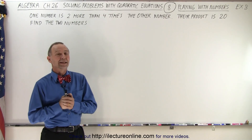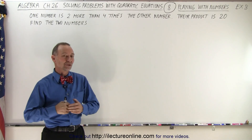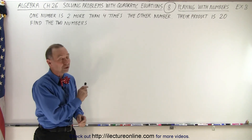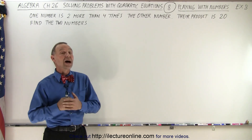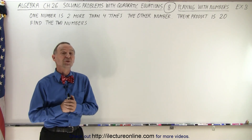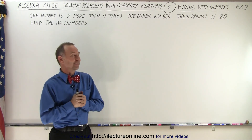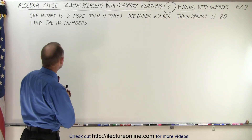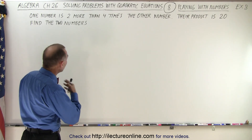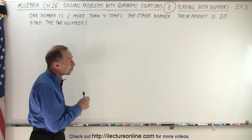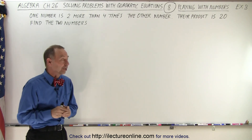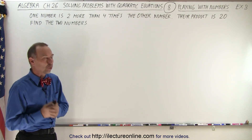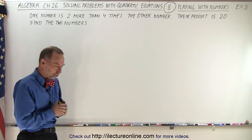Welcome to ElectronLine. Now that we understand quadratic equations and how to solve them, we can solve more complicated 'find the two numbers' kind of problems. We have one number that is two more than four times the other number, and the product of the two numbers is equal to 20. Find the two numbers.